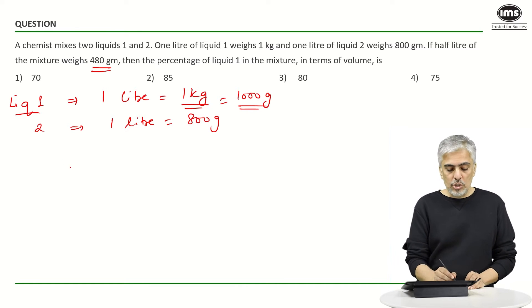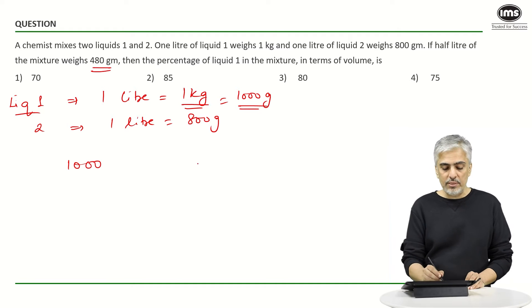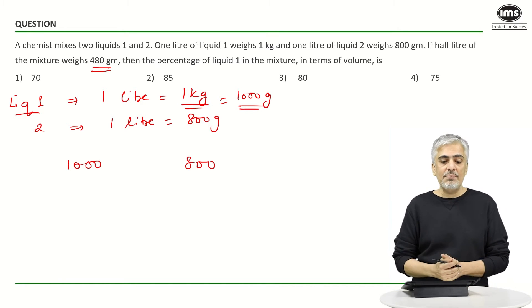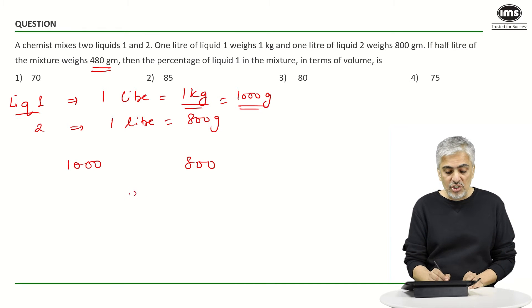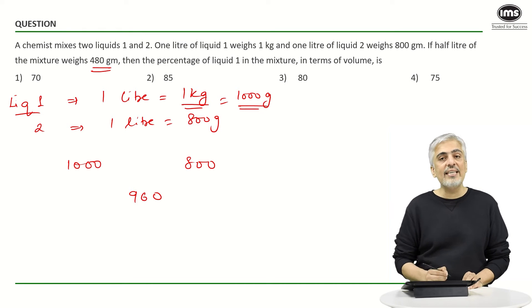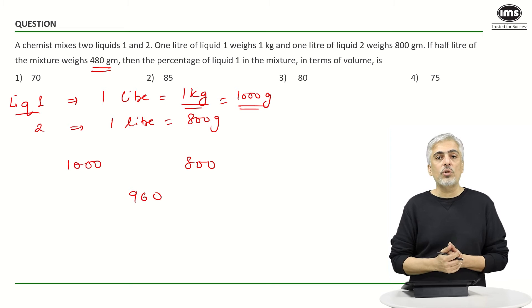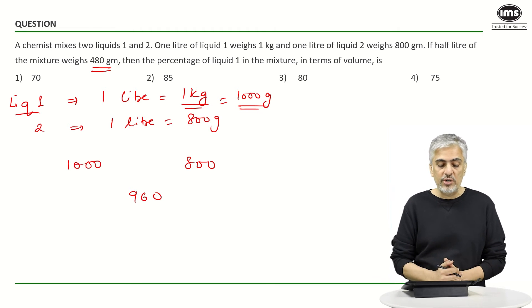So if I took one liter of liquid 1, that is 1000 grams. One liter of liquid 2, that is 800 grams. But when I take one liter of the mixture which is 960 grams, I'm sure you're realizing what I am hinting to. It is a straightforward question on allegations.